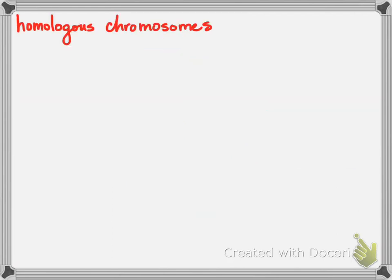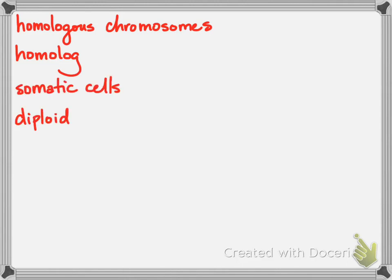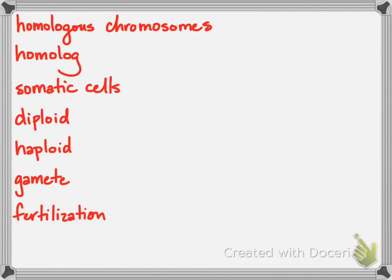A few terms to note — be looking out for them on the next slide; they'll be in red, just like they are right now. Those terms are: homologous chromosomes, homolog, somatic cells, diploid, haploid, gamete, fertilization, and zygote.